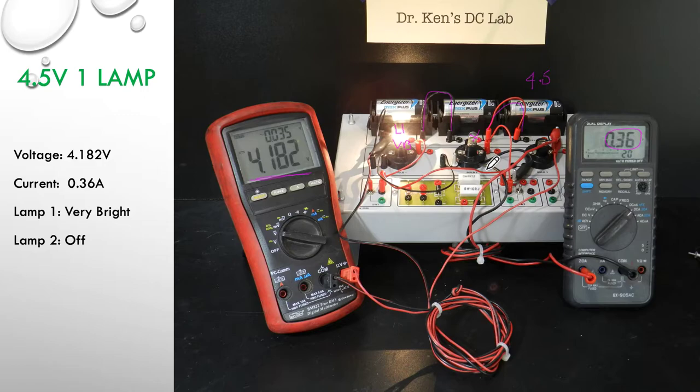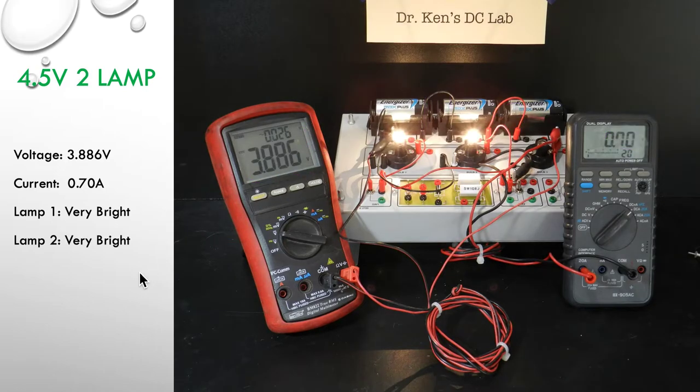So again when we now turn the second lamp on, we should see this current here go up by two again, twice as much current. So it's going to go up to probably a little over 700 milliamps and our voltage will probably just drop down a fraction as we increase the load. So let's go to our next slide, we've got two lamps on very very bright our voltage as you can see now has dropped to 3.88 volts so just under four and our current has doubled to 700 milliamps and L1 and L2 are very very bright. So the amount of power has increased considerably.